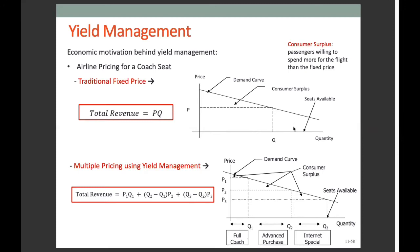The total revenue from setting price to P results in P times Q. If we set the price to P and sell Q seats, where Q is less than the number of seats available, then there will be empty seats resulting in lost revenue. Additionally, we will have a consumer surplus — meaning there are many passengers willing to spend considerably more for the flight than the fixed price P. For instance, some seats could be sold at a price higher than P, but we cannot charge that higher price.